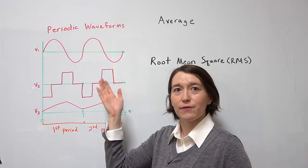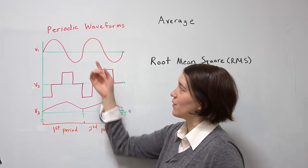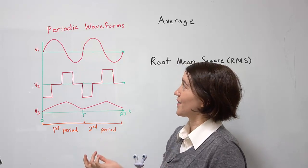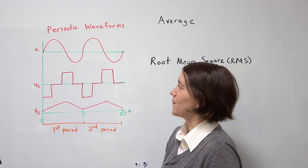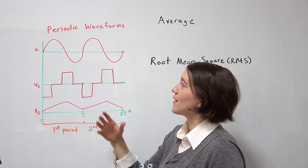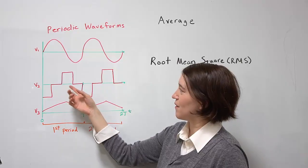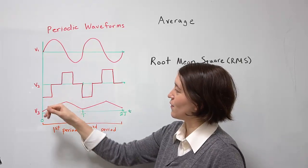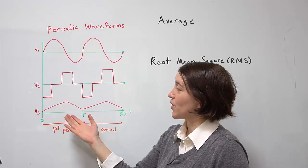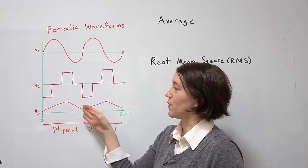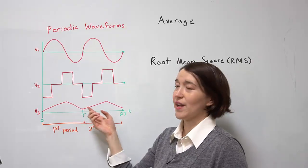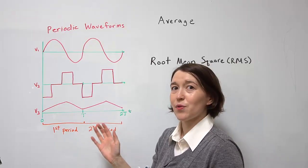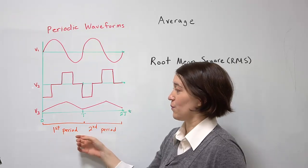I've drawn a few periodic waveforms here. The very simple one is a sinusoid — people commonly know that waveform. I've drawn a few other ones. This is a type of pulsed waveform; it can have positive and negative. You can also have waveforms that are all positive or triangular in shape. The waveform itself isn't important — what's important is that it repeats.